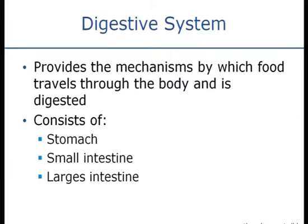The digestive system provides the mechanism by which food travels through the body and is digested. This pulsating movement of food through the system is known as peristalsis. The digestive system includes the mouth, the teeth, the esophagus, and the stomach. Food is chewed and saliva and digestive enzymes are added as you swallow. It ends up in the stomach for about three hours, mixed with gastric acid and gastric juices, then passed into the small intestine, which is made up of three parts: the ileum, the duodenum, and the jejunum.